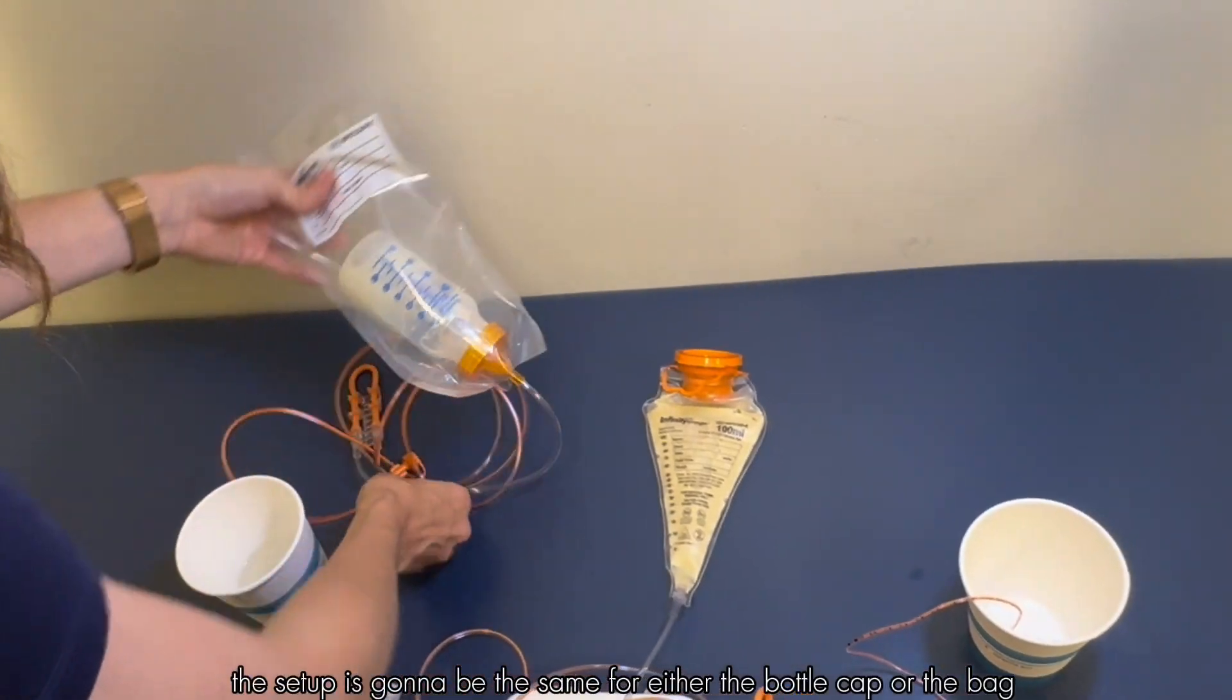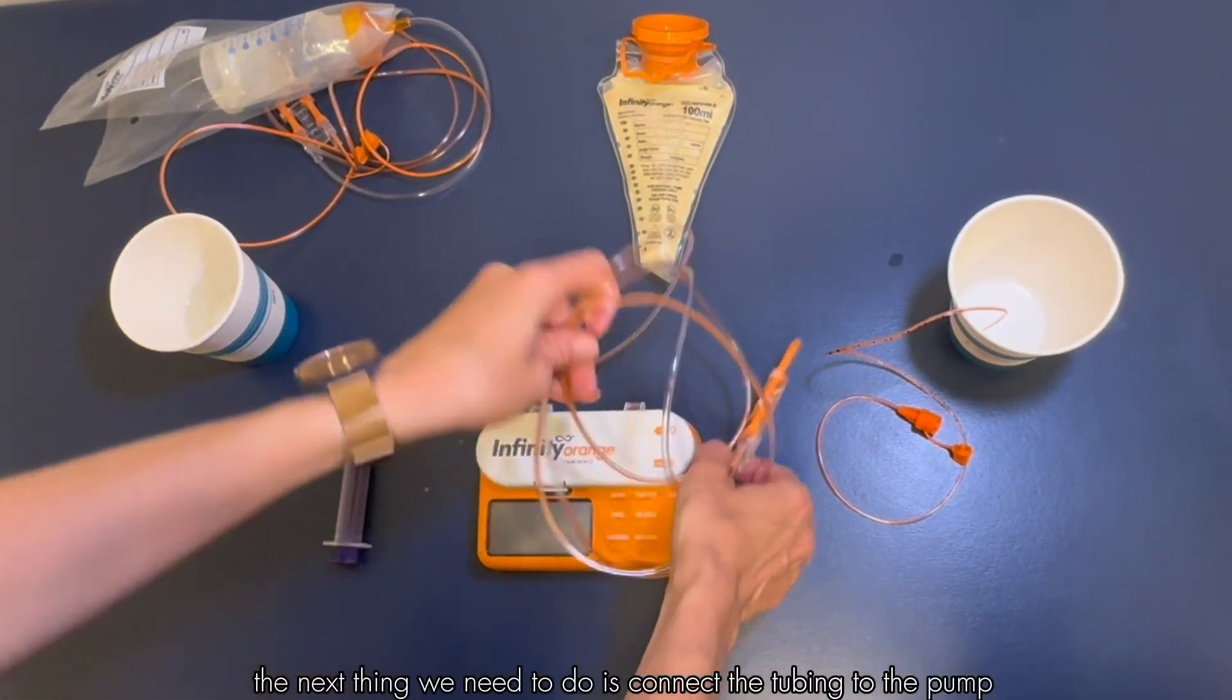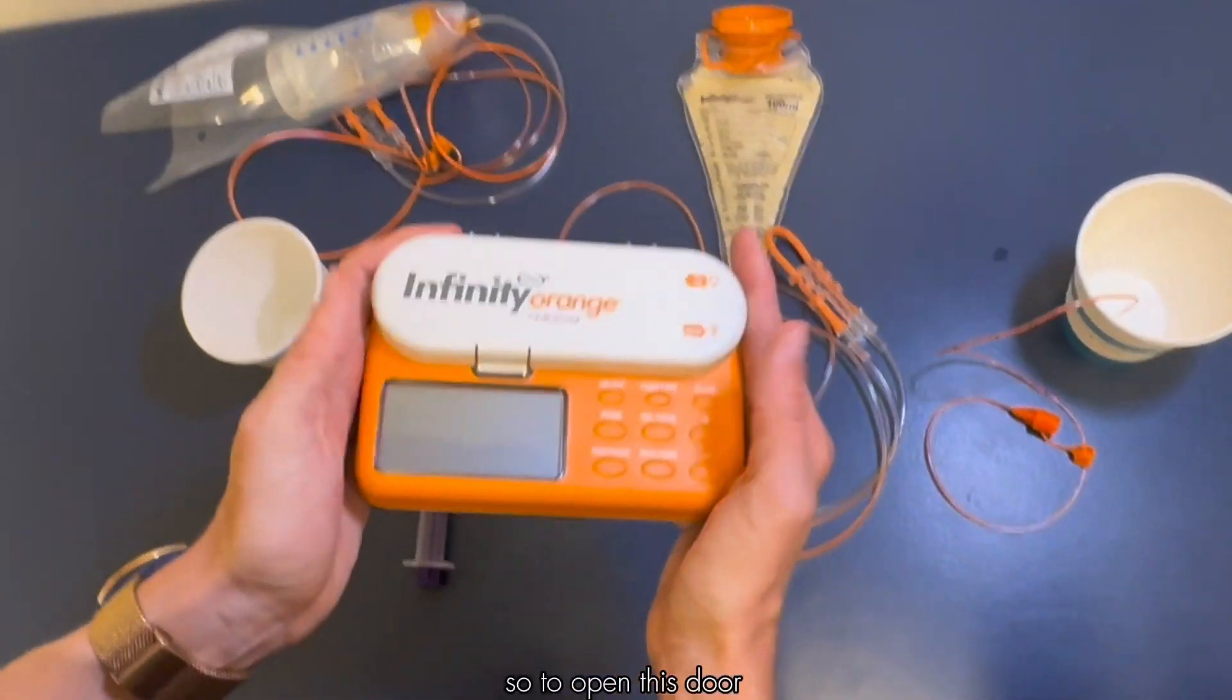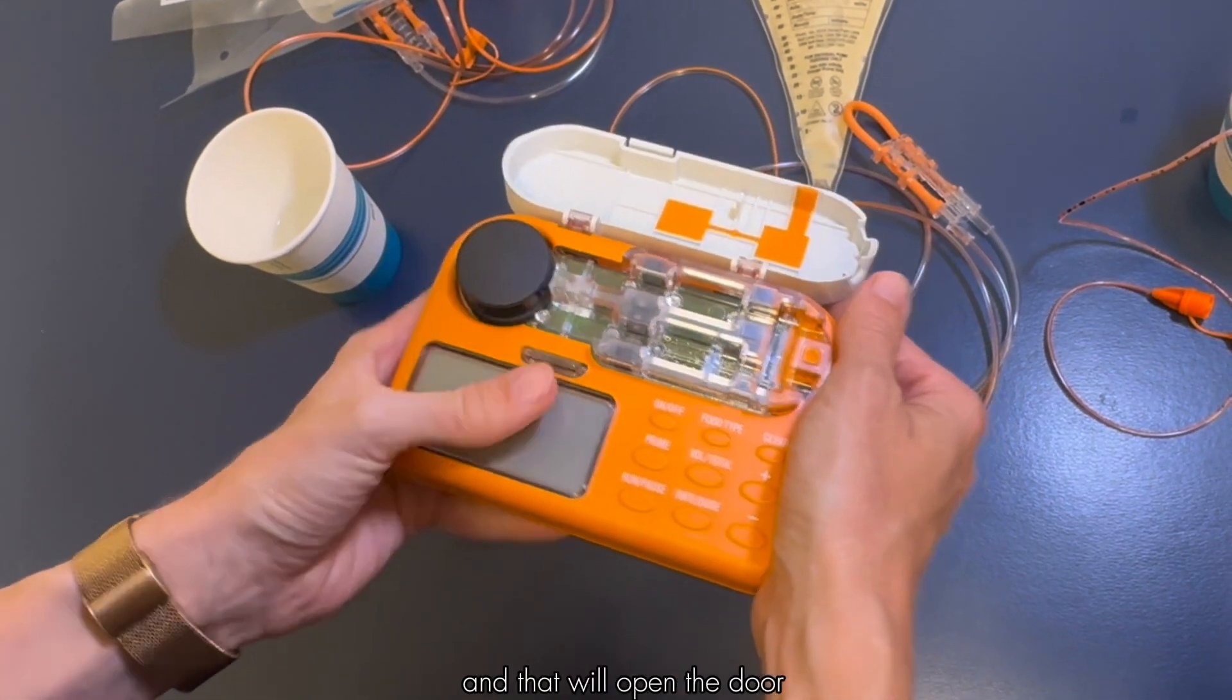From here on the setup is going to be the same for either the bottle cap or the bag. The next thing we need to do is connect the tubing to the pump. To open this door I like to take a thumb on either side and push in and up and that will open the door.